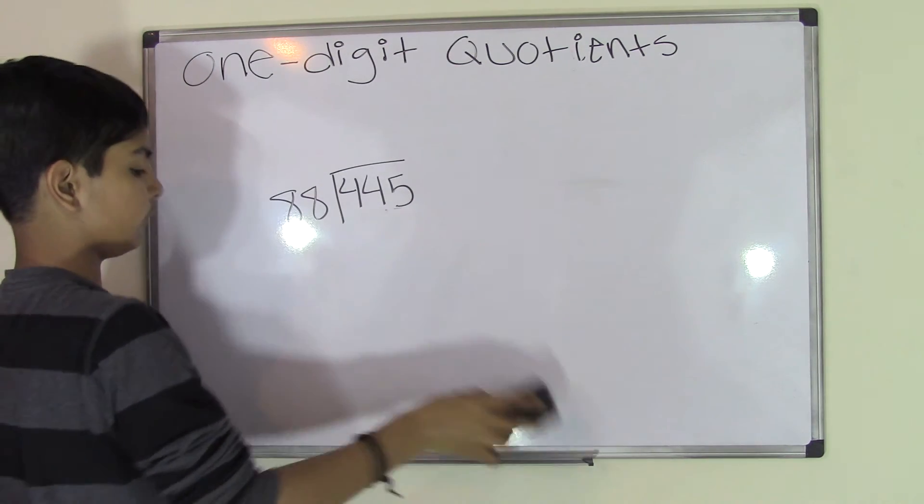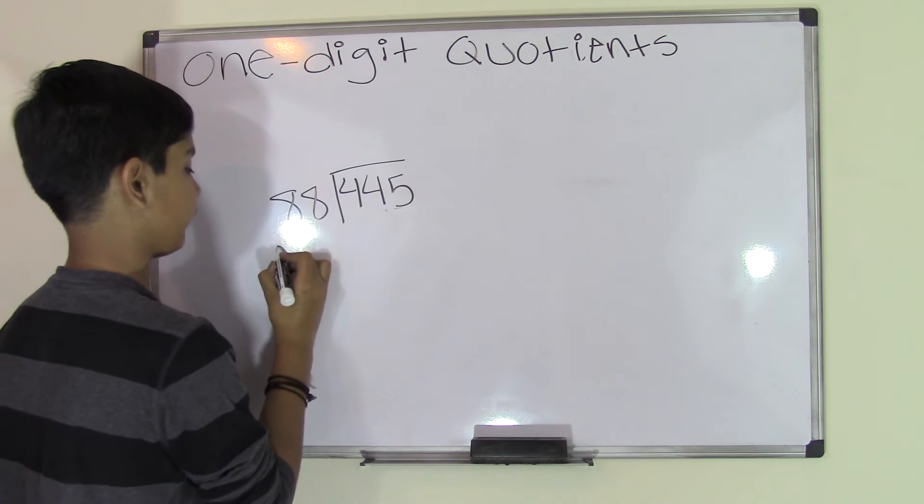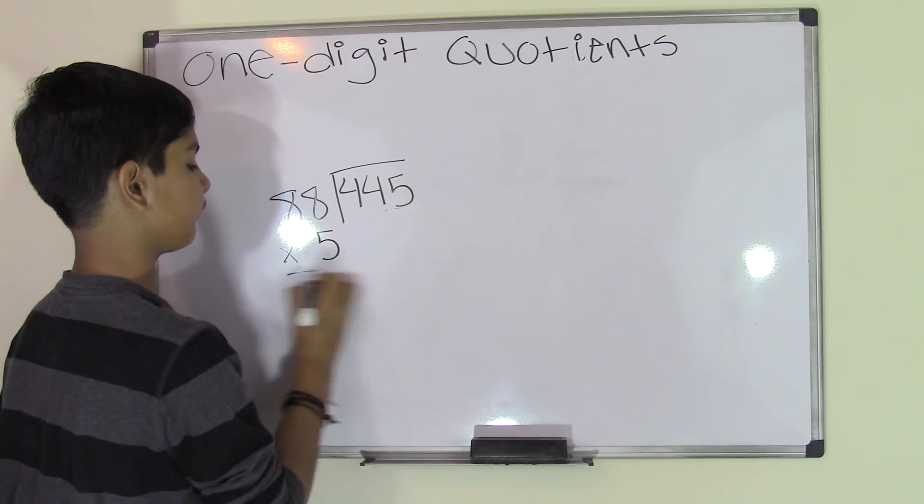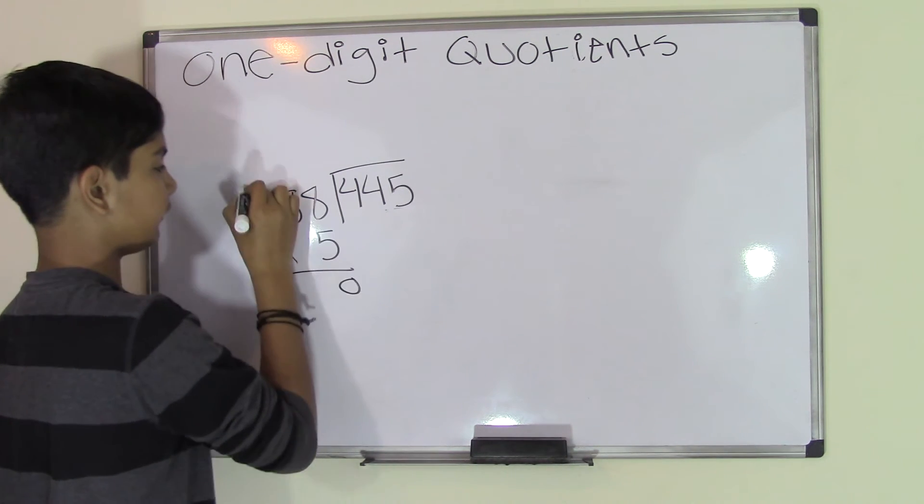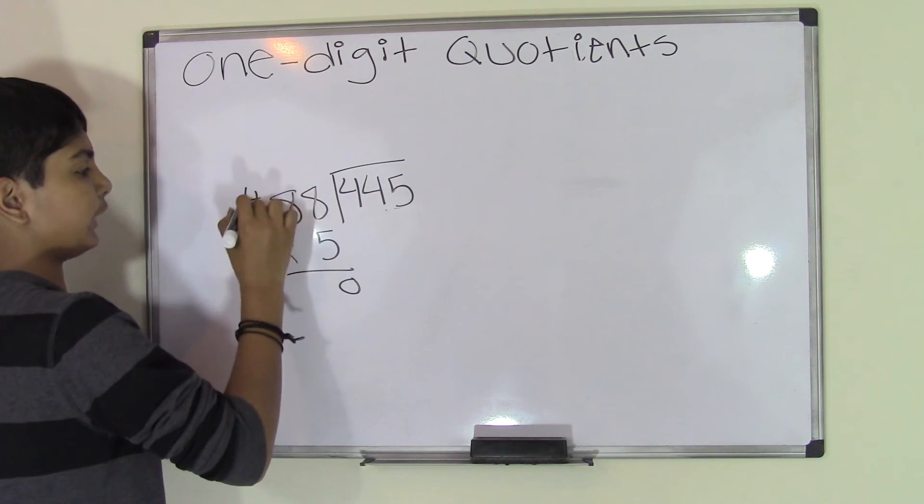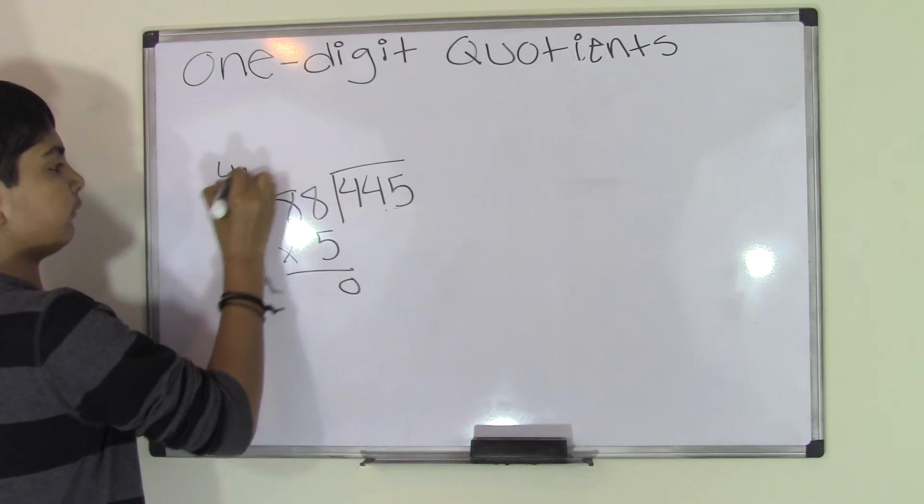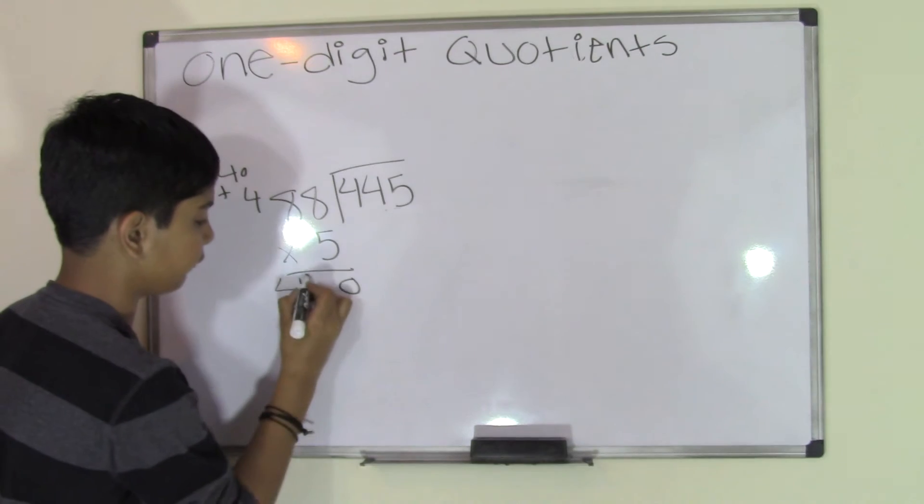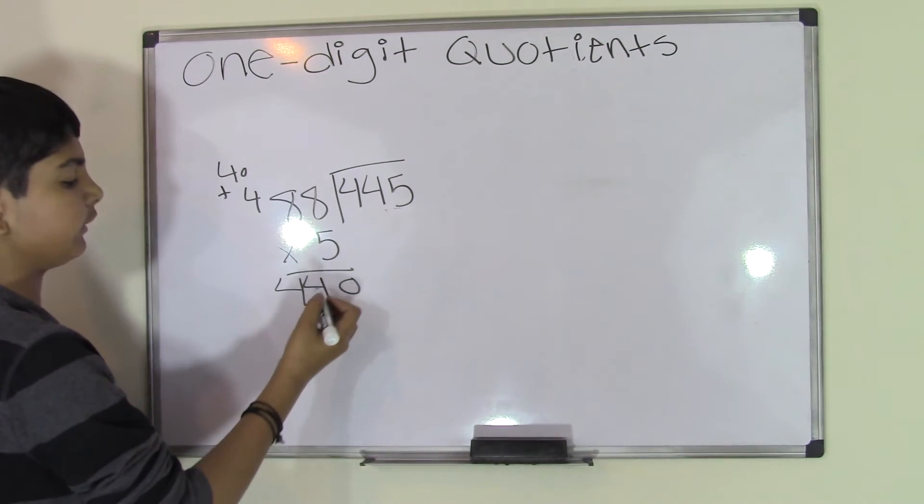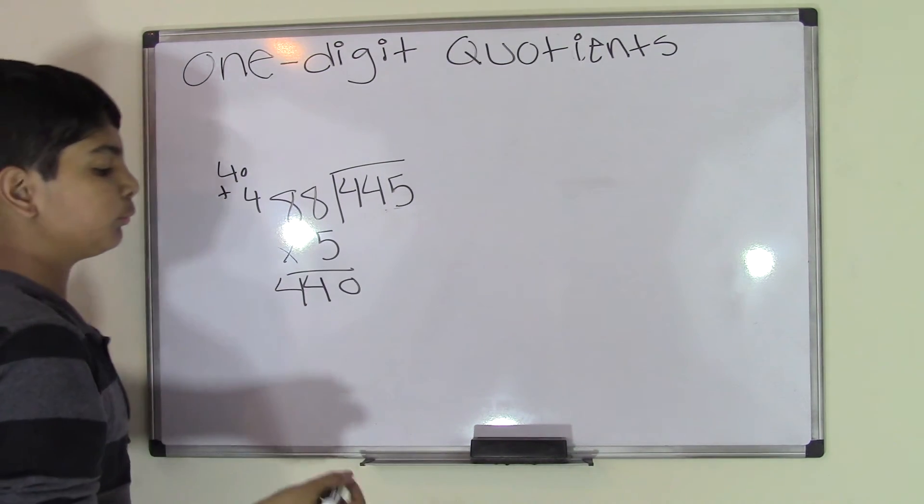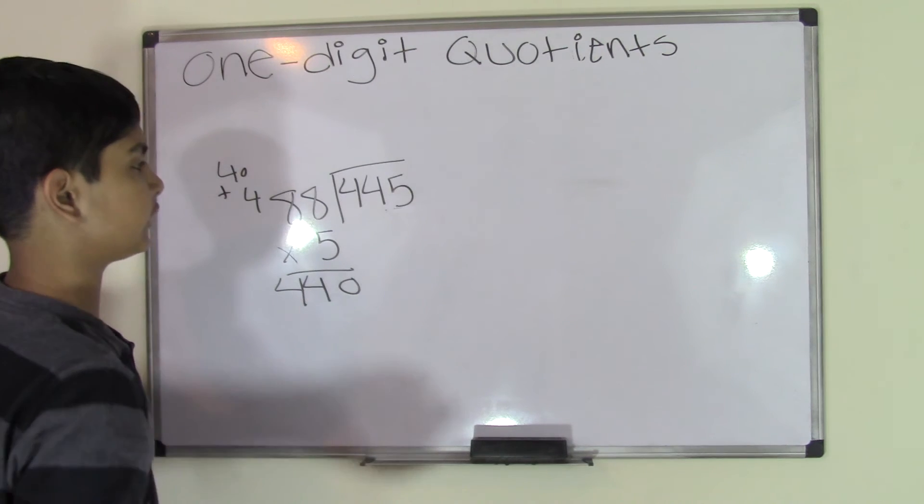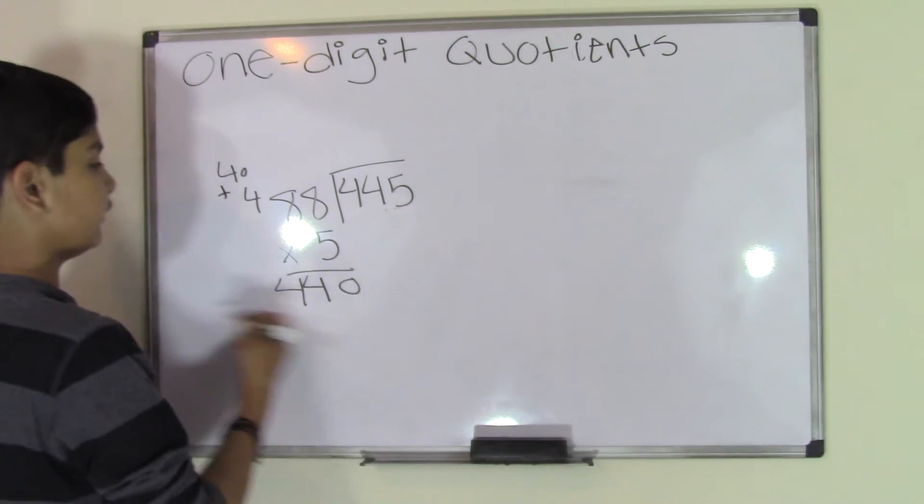So 88 times 5. 5 times 8 is 40. 5 times 8 is 40. 40 plus 4 is 44, so we get 440. Let's do one more to see if there's an even closer answer.